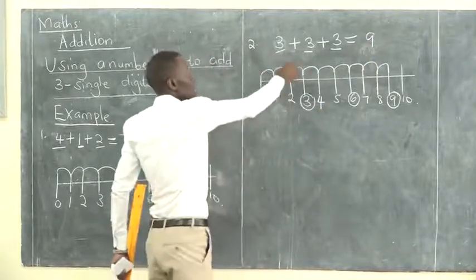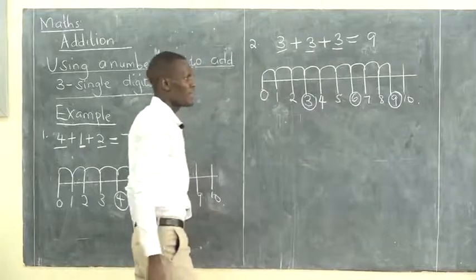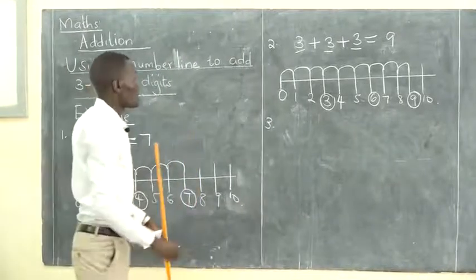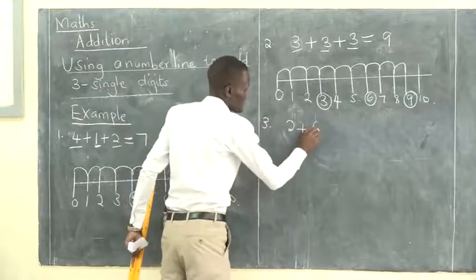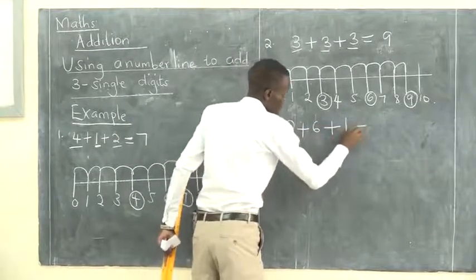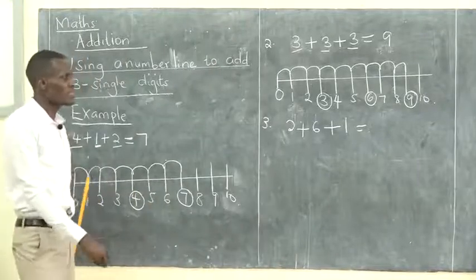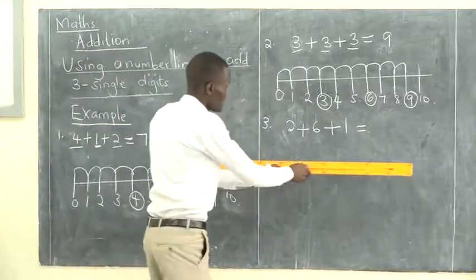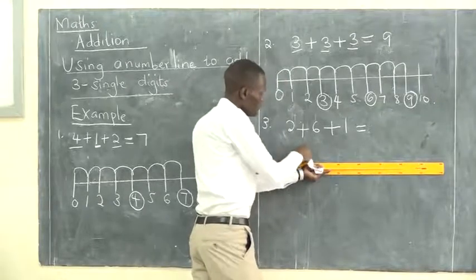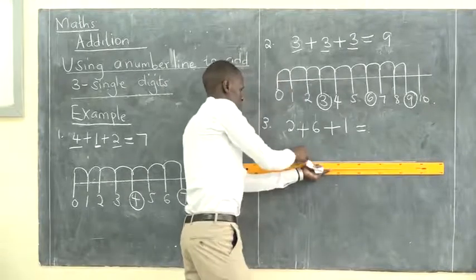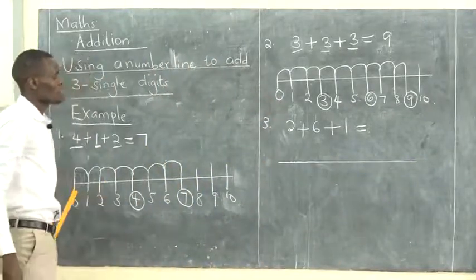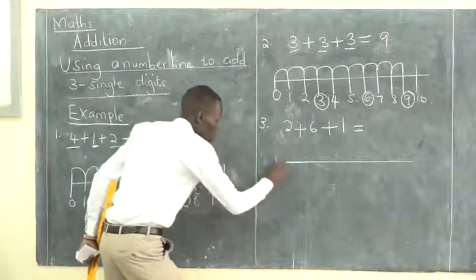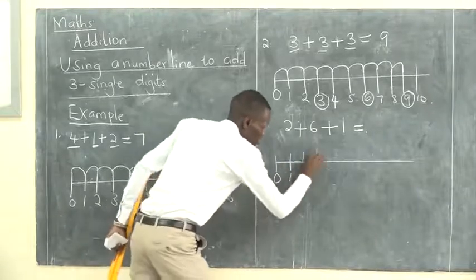This is our answer: nine. Three plus three plus three equals nine. Now let's solve example three: two plus six plus one. The first step is to draw our number line with a ruler. After you draw your number line, show the numbers on the number line.